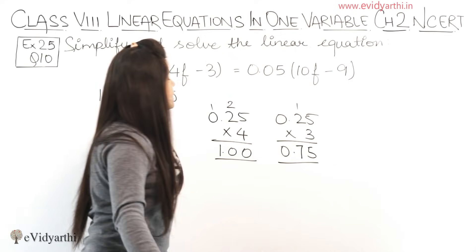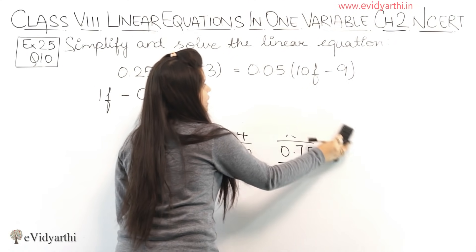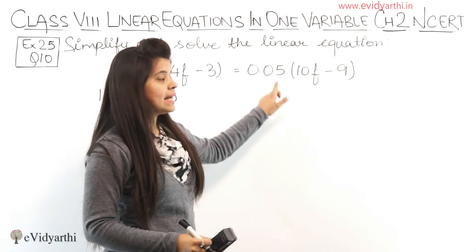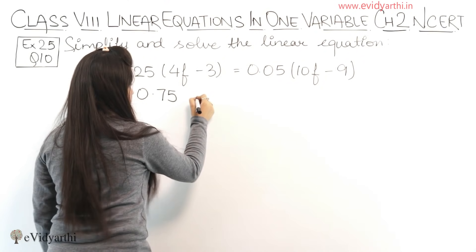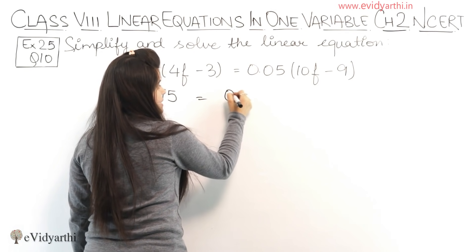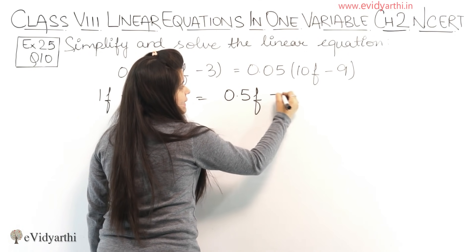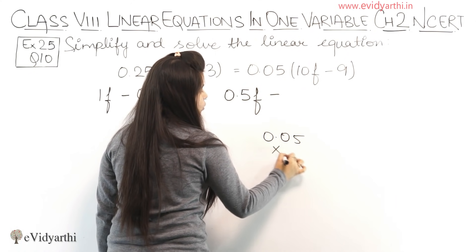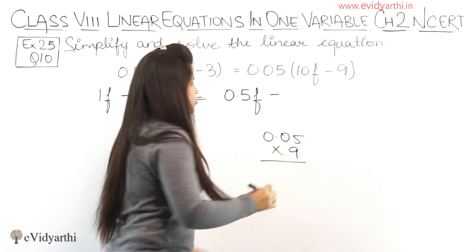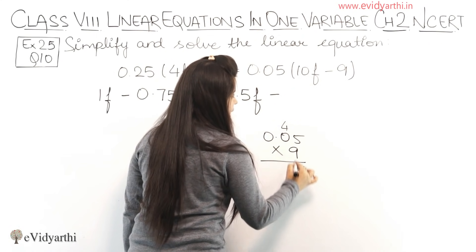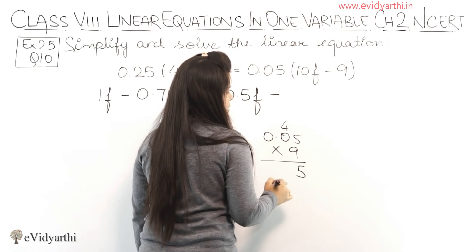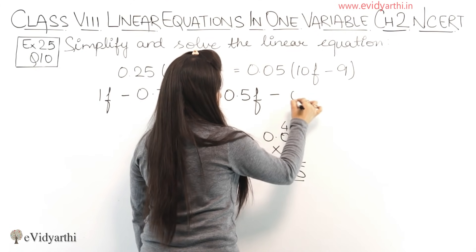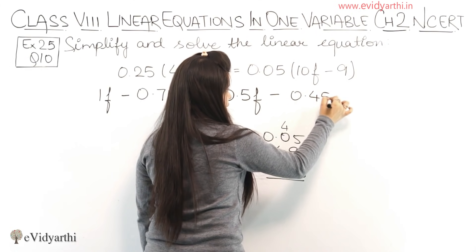Next we have to multiply 0.05 into 10. Now multiplying by 10 means the point will shift one place. So we have 0.5f minus 0.05 into 9. 9 into 5 is 45, 9 into 0 is 0 plus 4, so we will get 4. Then 9 zeros are 0. So this is 0.45.